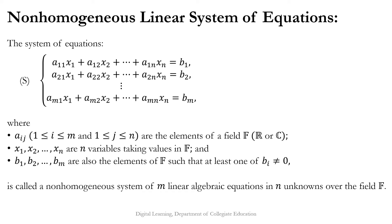Consider m equations: a₁₁x₁ + a₁₂x₂ + ... + a₁ₙxₙ = b₁, a₂₁x₁ + a₂₂x₂ + ... + a₂ₙxₙ = b₂, through aₘ₁x₁ + aₘ₂x₂ + ... + aₘₙxₙ = bₘ, where the coefficients aᵢⱼ are elements of a field F, the variables x₁ through xₙ are unknowns taking values from F, and b₁ through bₘ are given elements from F such that at least one bᵢ is non-zero. We denote this system as S. Such a system is called a non-homogeneous linear system of m equations in n unknowns over the field F.